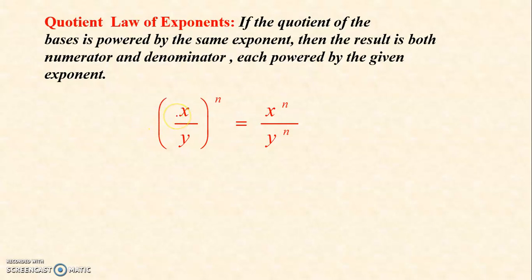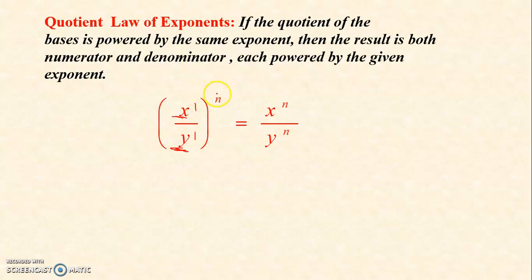Try to observe. The operation between x and y is division, but they do not have the same base — one is x and the other is y — so we cannot subtract their exponents. The exponent of x here is 1, and the exponent of y is also 1, and it is being raised by another exponent, which is n.